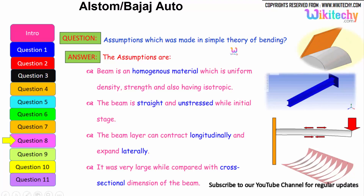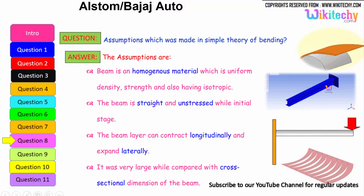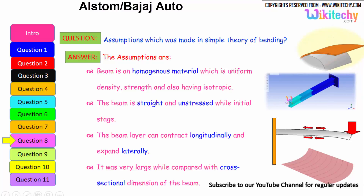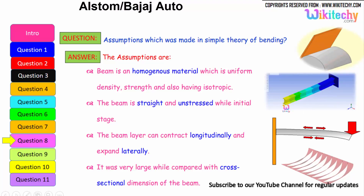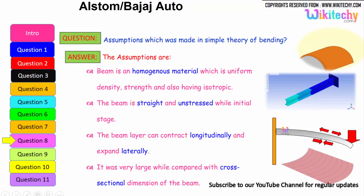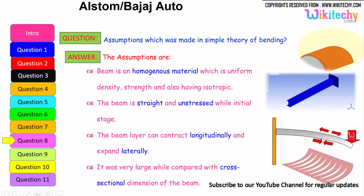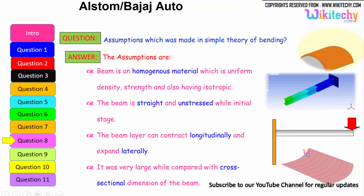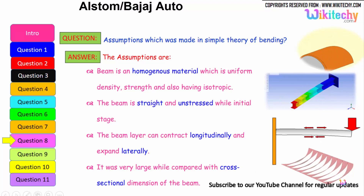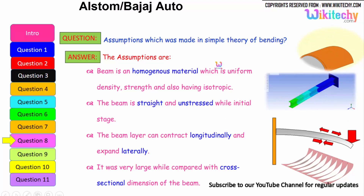What are the assumptions made in the simple theory of bending? The assumptions are: the beam is made of a homogeneous material with uniform density, uniform strength, and is isotropic. The beam is straight and unstressed in its initial stage. The beam can contract longitudinally and expand laterally. The radius of curvature is very large when compared with the cross-sectional dimension of the beam. These are the key assumptions for the simple theory of bending.